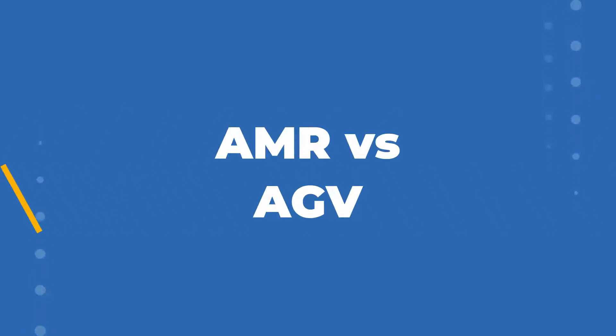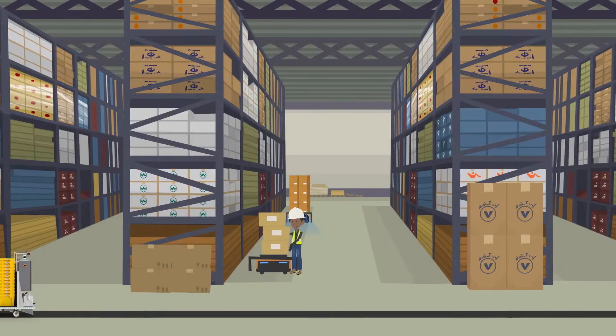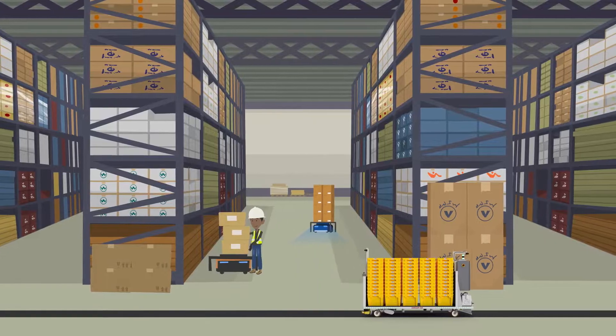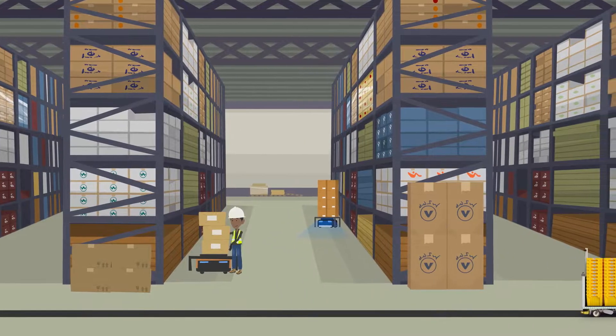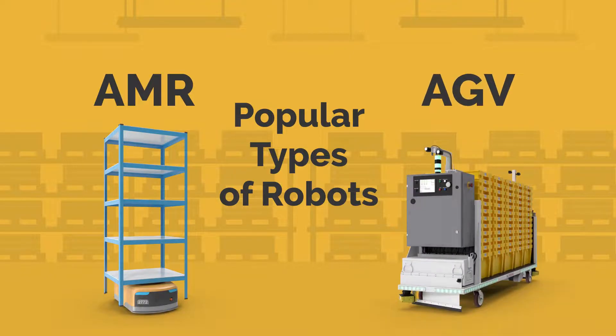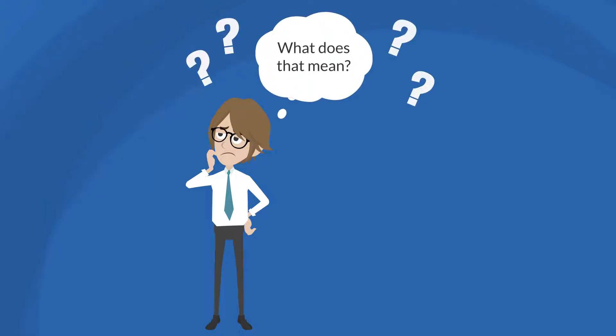AMR and AGVs. What's the difference? In modern manufacturing and warehousing, automated material handling systems have revolutionized the way we move goods. Two of the most popular systems used today are AMRs and AGVs. But what exactly are they, and what sets them apart?